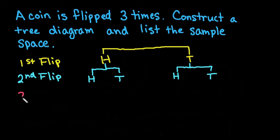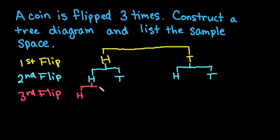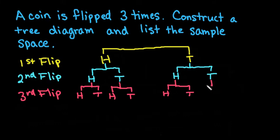For the third flip, it doesn't matter what we got on the first two trials. The coin doesn't have a memory. So I could get heads-heads and then heads again, or heads-heads and then tails. For each of the other branches I can still get heads or tails, so for every single flip I can get heads or tails for the next one.